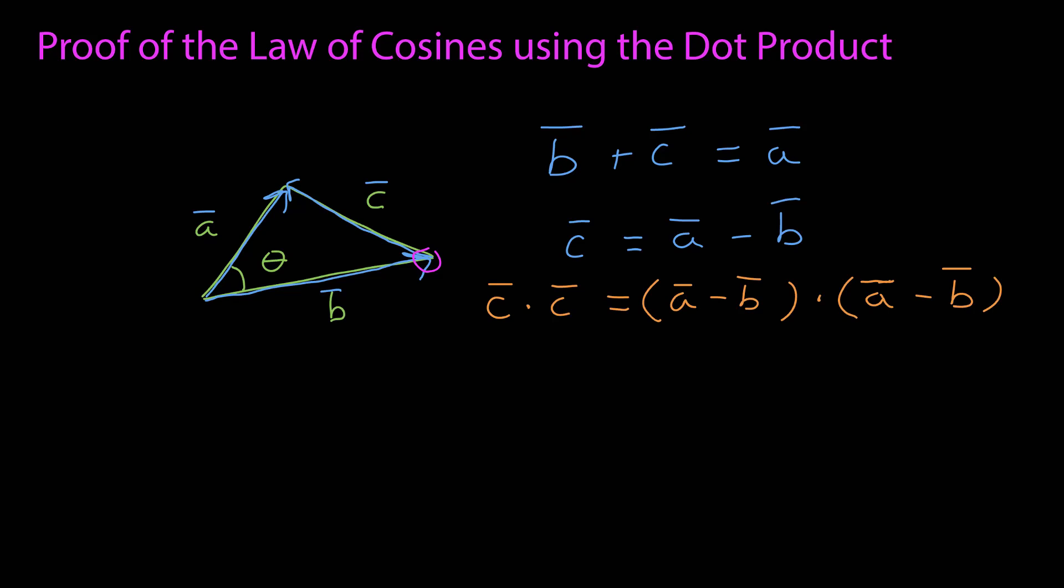Now I want to take the dot product of both sides, which I can because c is equal to a minus b, so I take the dot product on the left by c, and the dot product on the right by a minus b.